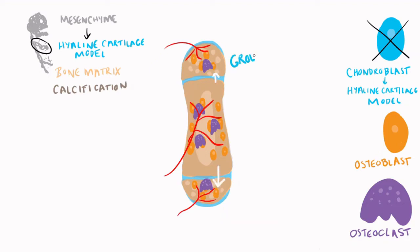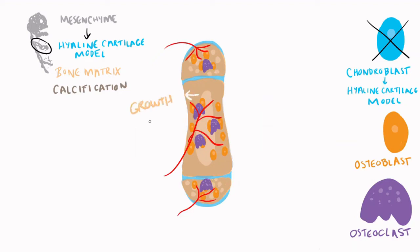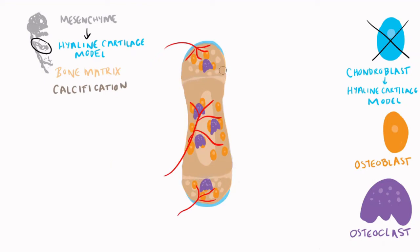Bone then grows in multiple dimensions. Growth in length is called interstitial growth, which happens through endochondral ossification at epiphyseal plates. This adds bone on the diaphyseal side, growing the shaft of the bone — the diaphysis — in length. Bone also grows in width through appositional growth, which takes place directly on the surface of bone or just superficial to the medullary cavity. Eventually, epiphyseal plates are replaced by bone and called epiphyseal lines, and growth in length stops.